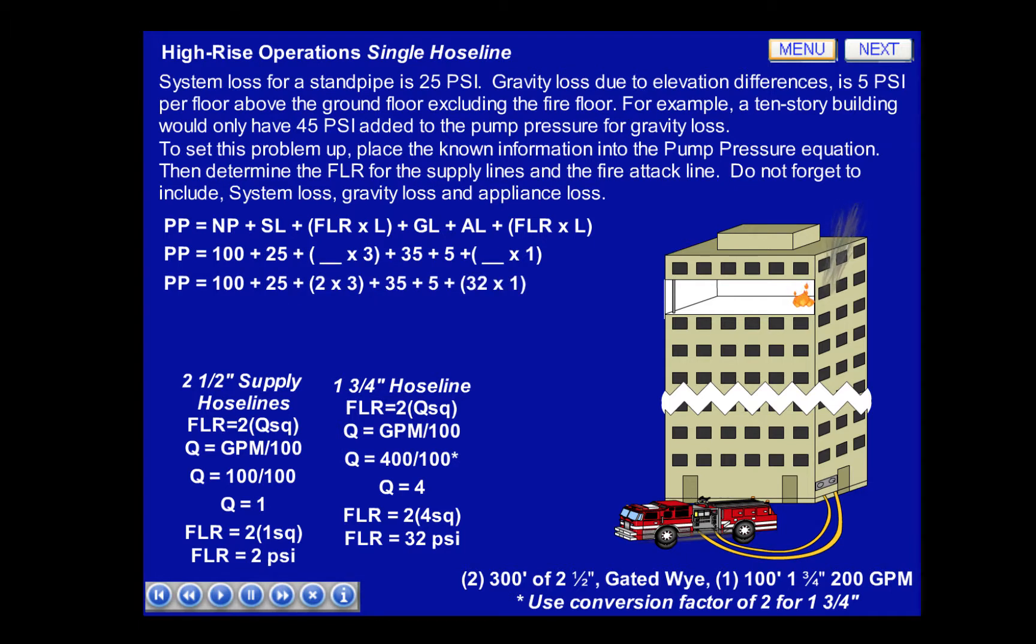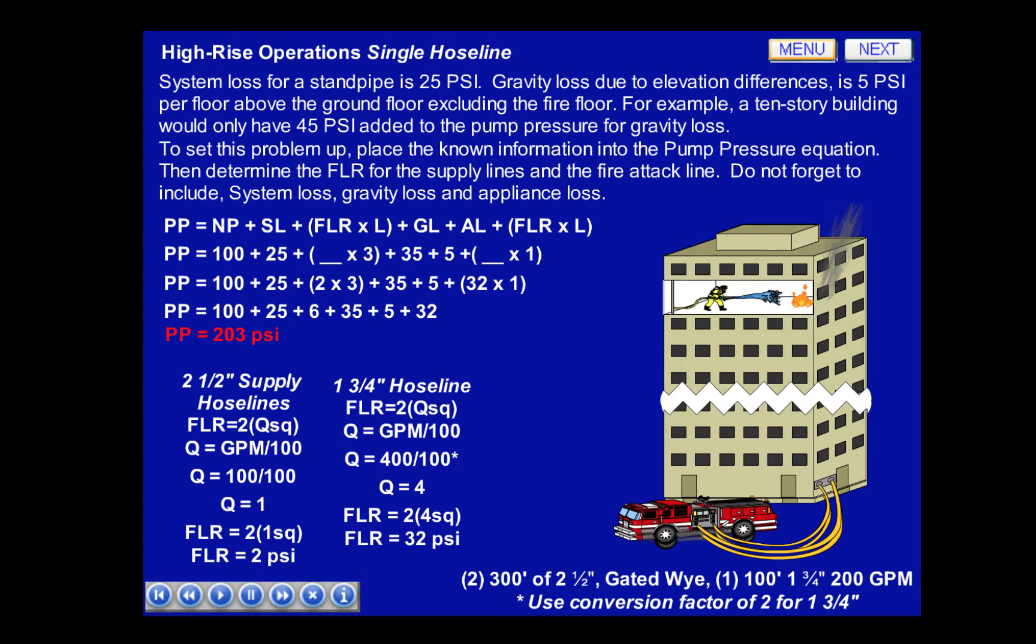So pump pressure equals 100 plus 25 plus 2 times 3 plus 35 plus 5 plus 32 times 1, or simply pump pressure equals 100 plus 25 plus 6 plus 35 plus 5 plus 32, or 203 PSI.